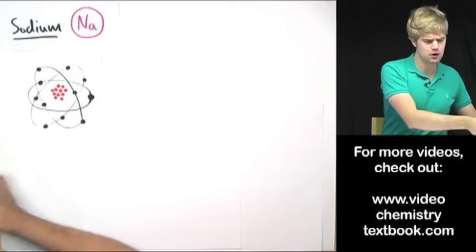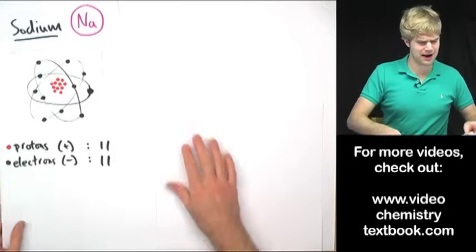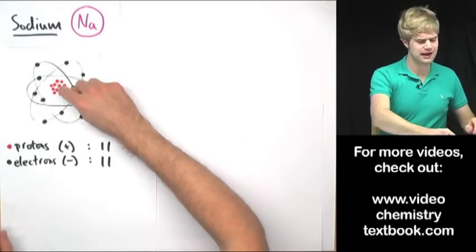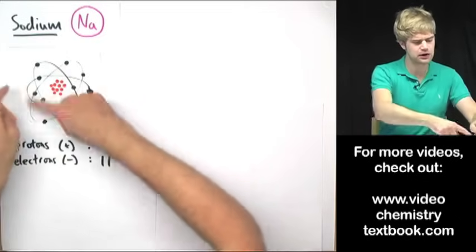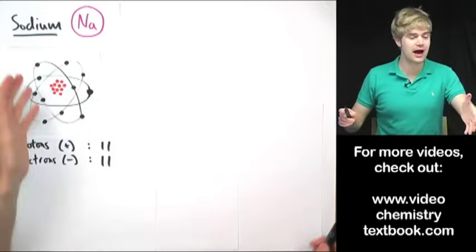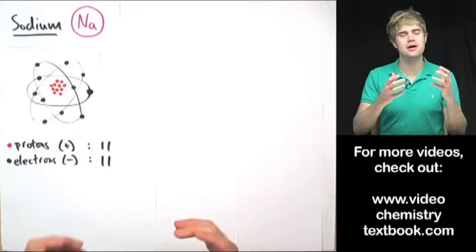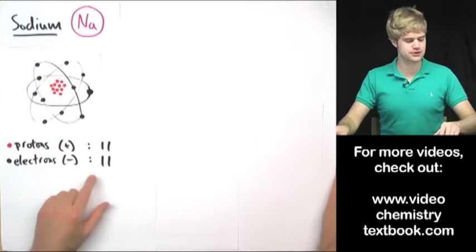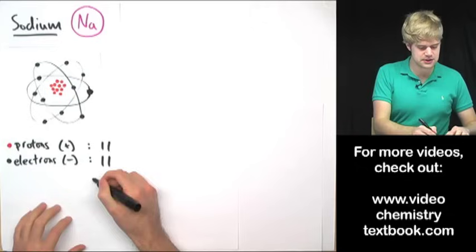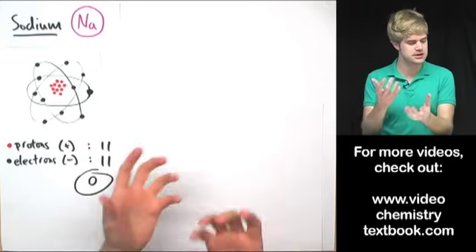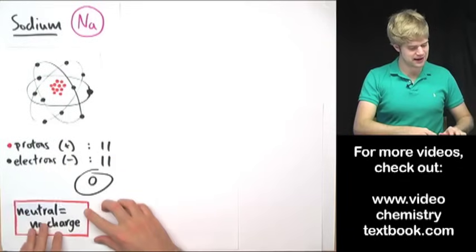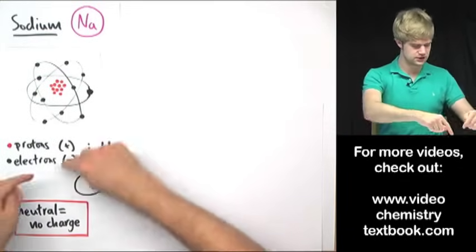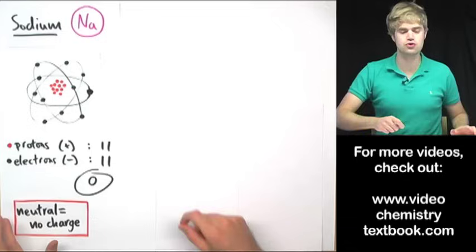Anyway, right now sodium has if we counted them 11 protons here in the nucleus and it has 11 electrons flying around outside. So the number of protons equals the number of electrons which means that my total net charge is zero. They cancel each other out. And so something that has no net charge like this sodium atom we call it neutral.